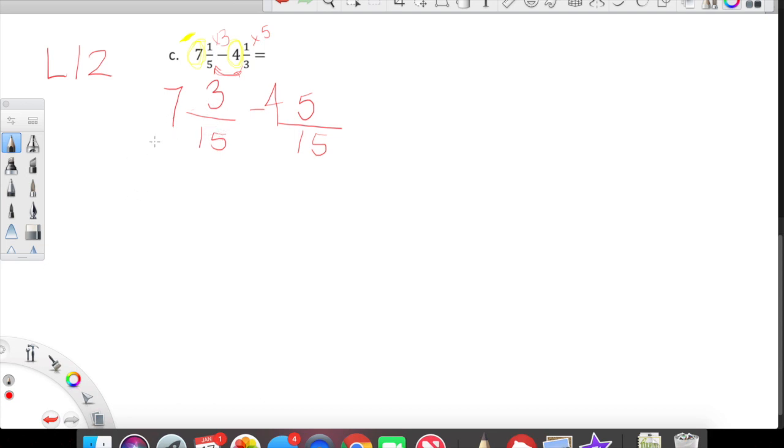So after all of that silliness with me highlighting the whole numbers, we are actually going to have to do some unbundling because you guys see that we cannot take 5 fifteenths away from 3 fifteenths. But the good news is 7 is very flexible. We're going to rework 7 as 6 plus 15 fifteenths. 6 plus 15 fifteenths is 7. So again, do not forget that we have 3 fifteenths as well.